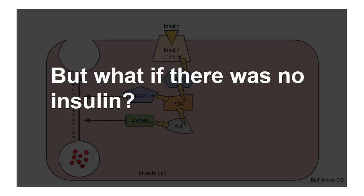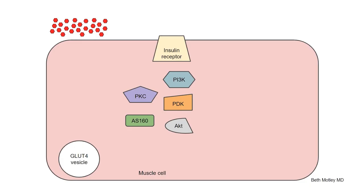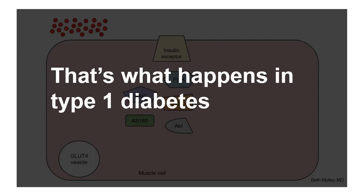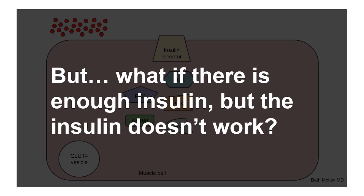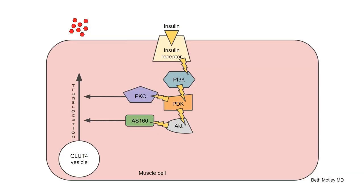But what if there was no insulin? Quite simply, if we don't have the key to unlock the door, sugar is going to build up outside the cell. That's what happens in type 1 diabetes, which is not the case in most people. But what if there is enough insulin, but for some reason the insulin doesn't work? In this scenario, we have the key to unlock the door — it looks like all the players are in place — but something is gumming up the lock in our muscle cell.